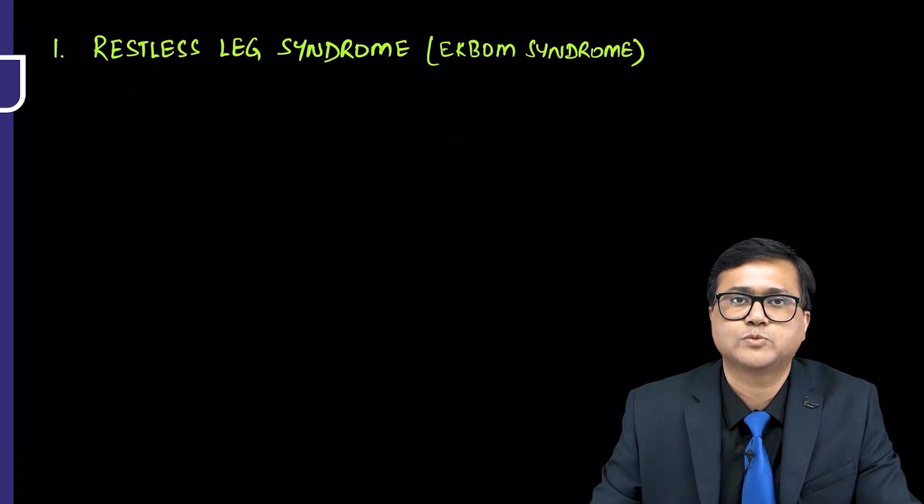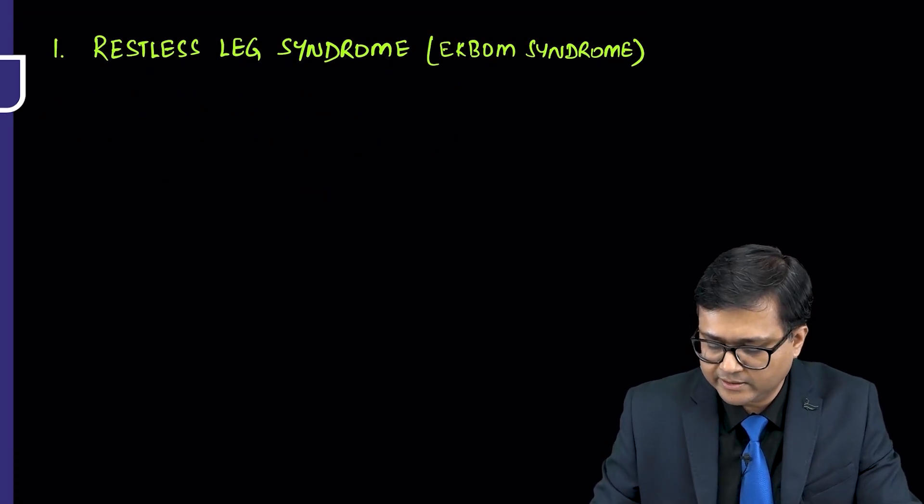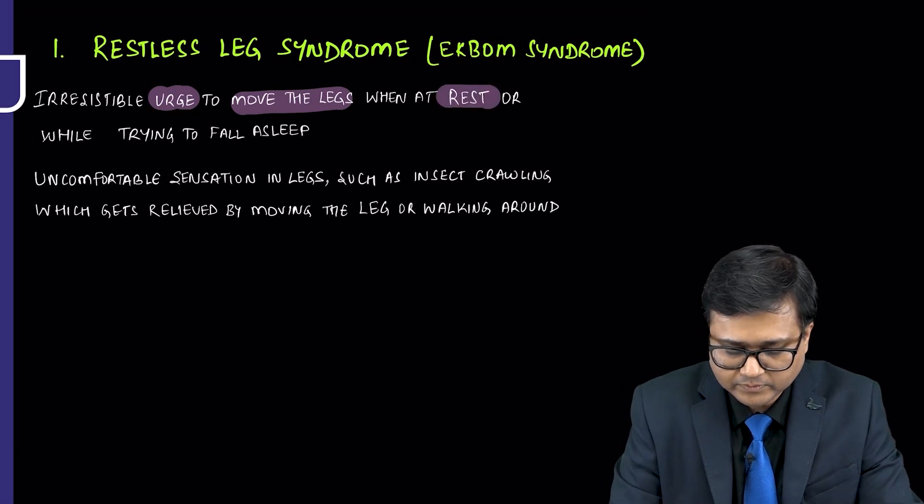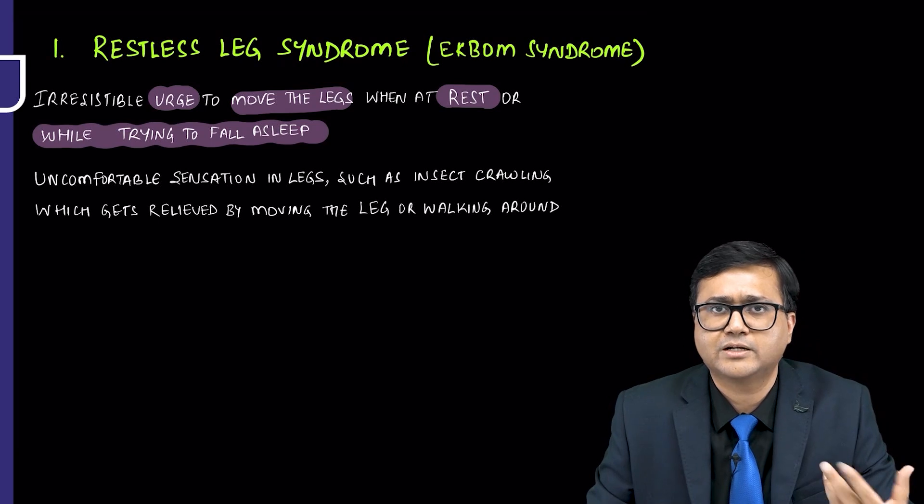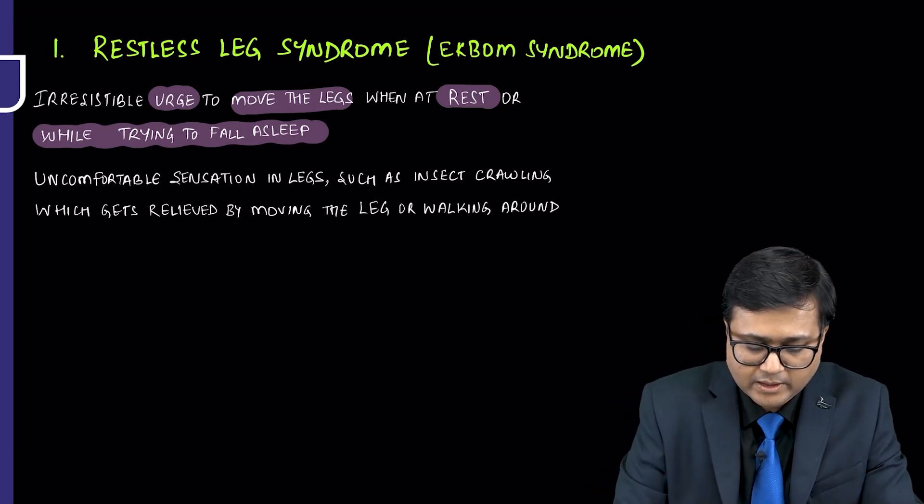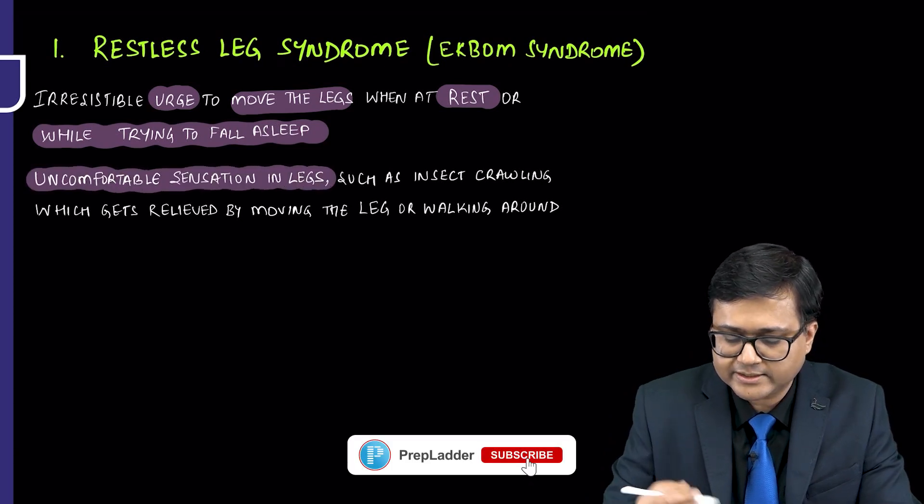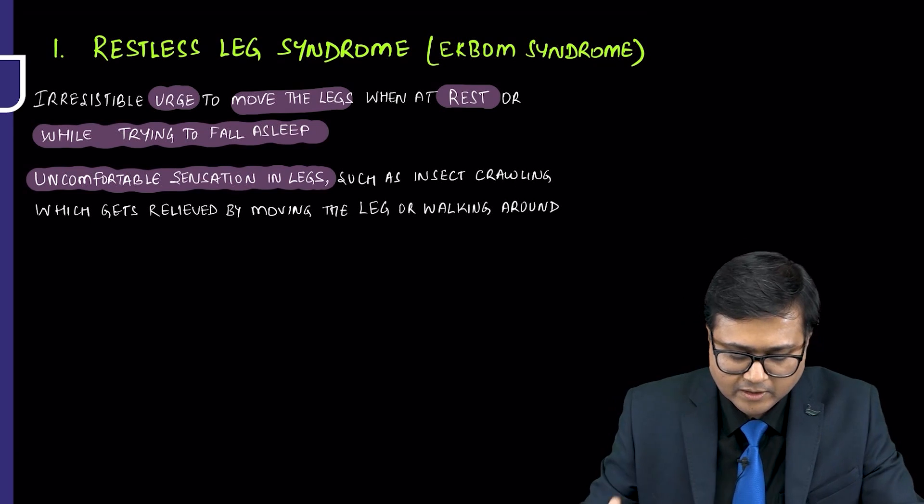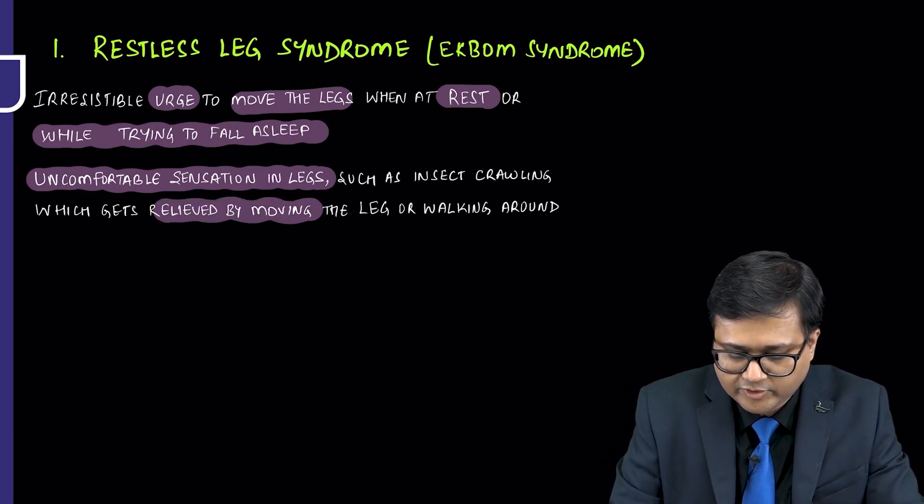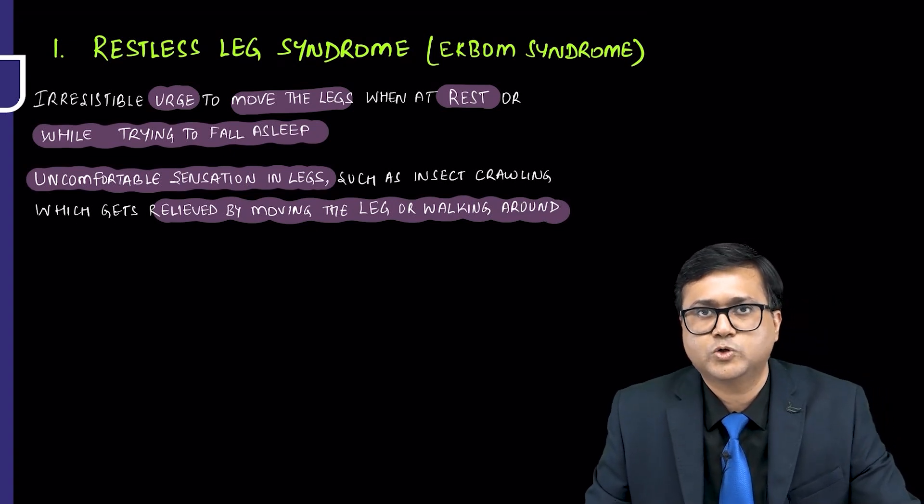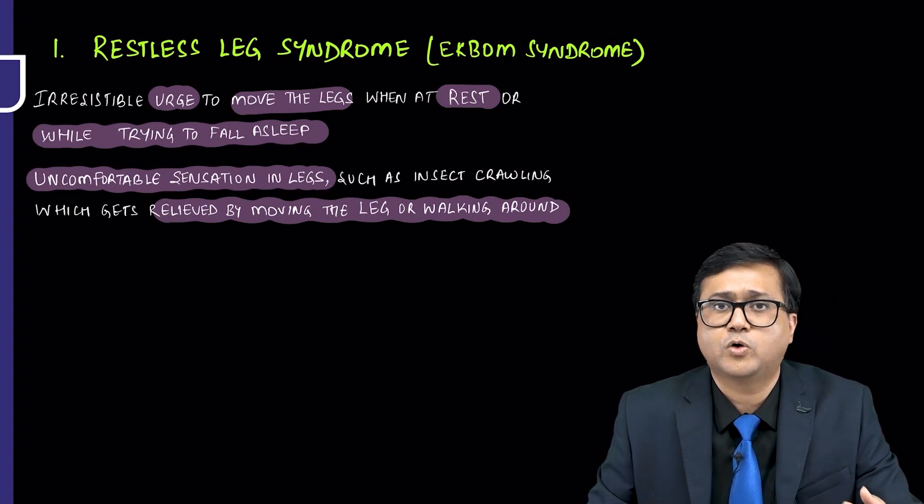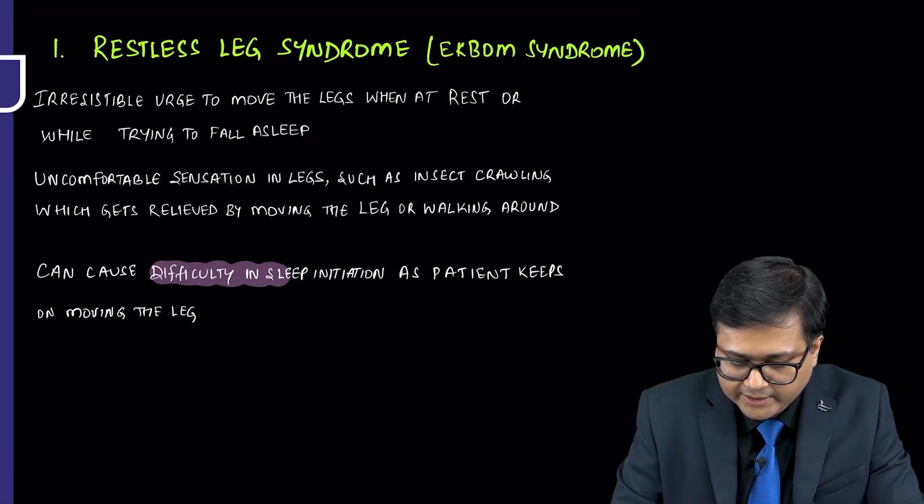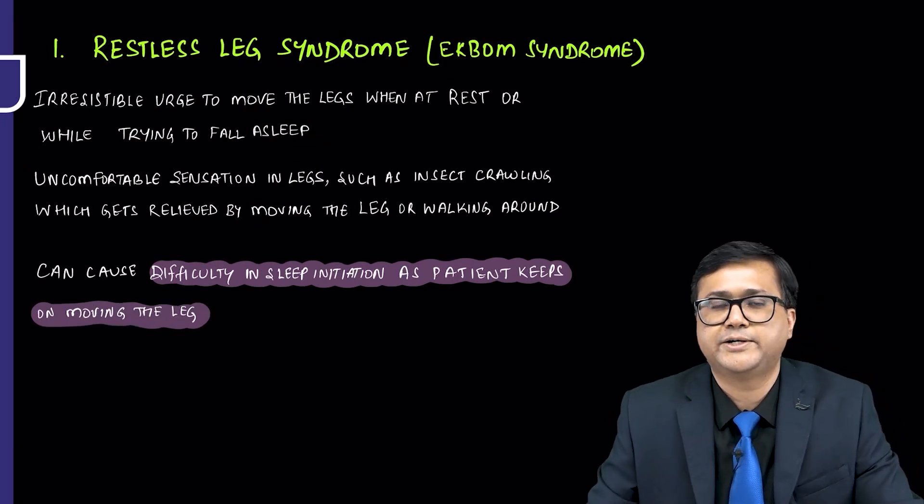Restless leg syndrome, also sometimes known as Ekbom syndrome. What happens, as the name suggests, restless leg: there is an irresistible urge to move the legs when the person is at rest or while trying to fall asleep. Person has an urge to move the legs, so there is restlessness in the leg. And there is uncomfortable sensation in the legs, such as insects crawling. Patient may complain that he is feeling as if some insects are crawling. That is why it is also known as Ekbom syndrome, which gets relieved by moving the leg or walking around. Person may have difficulty to be at rest or fall asleep and may start moving the leg or keep on walking. It can cause difficulty in sleep initiation and lead to secondary insomnia.